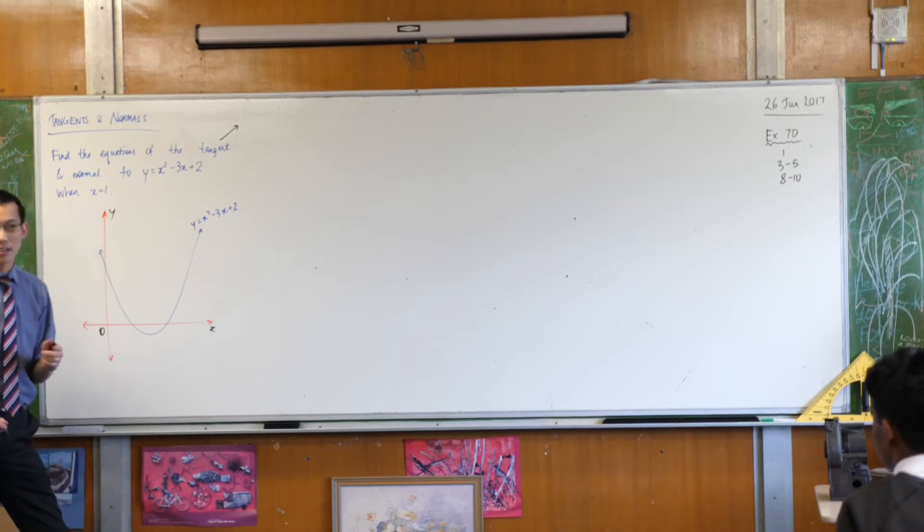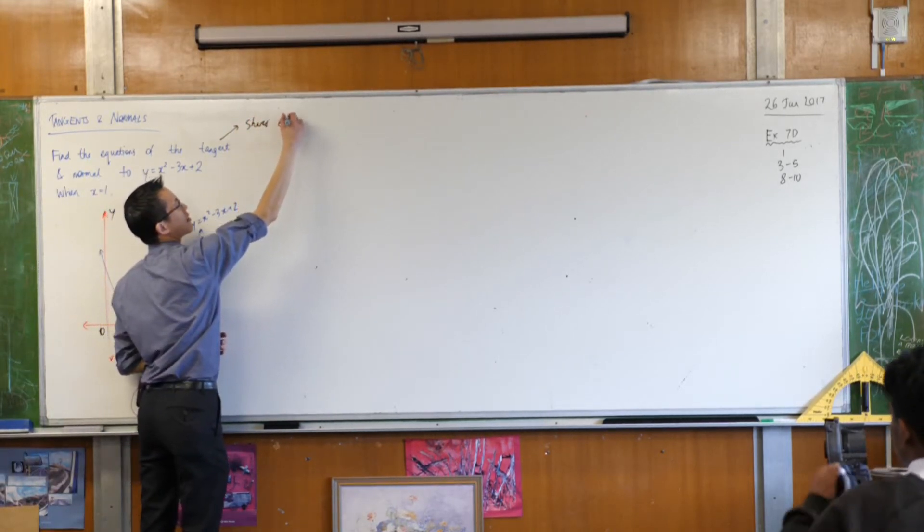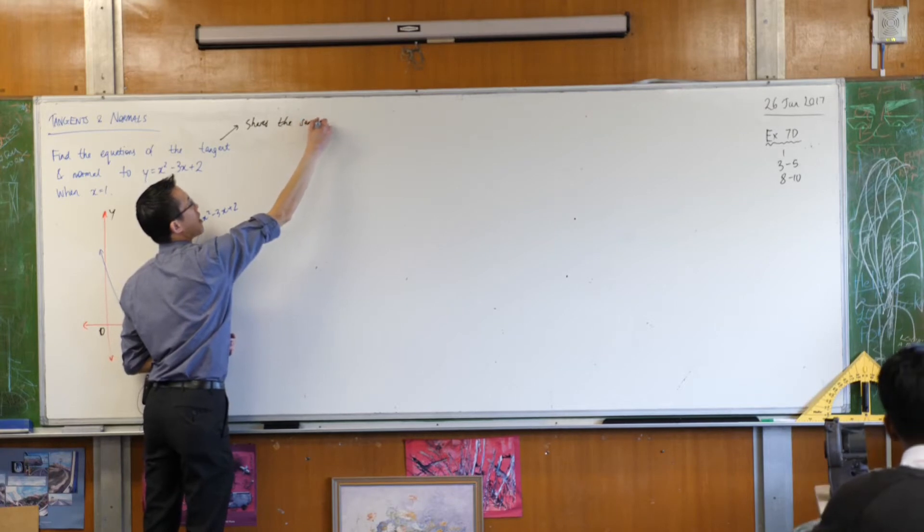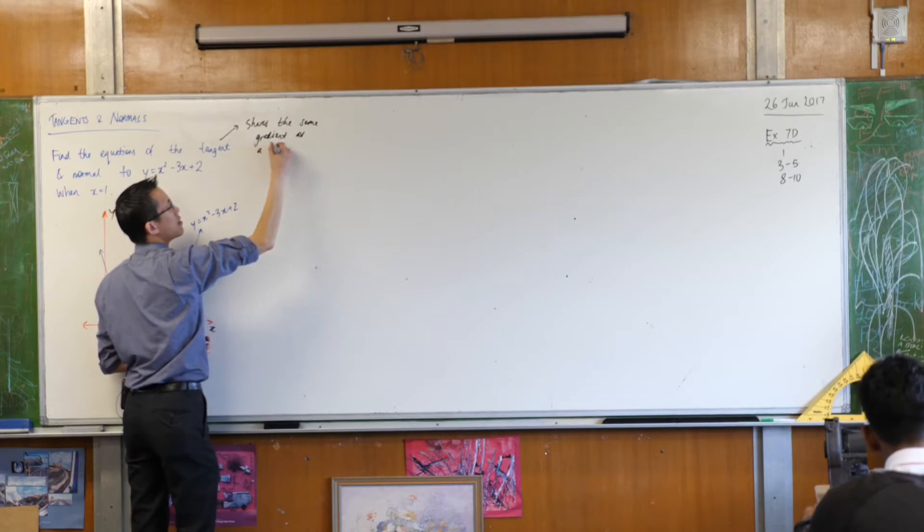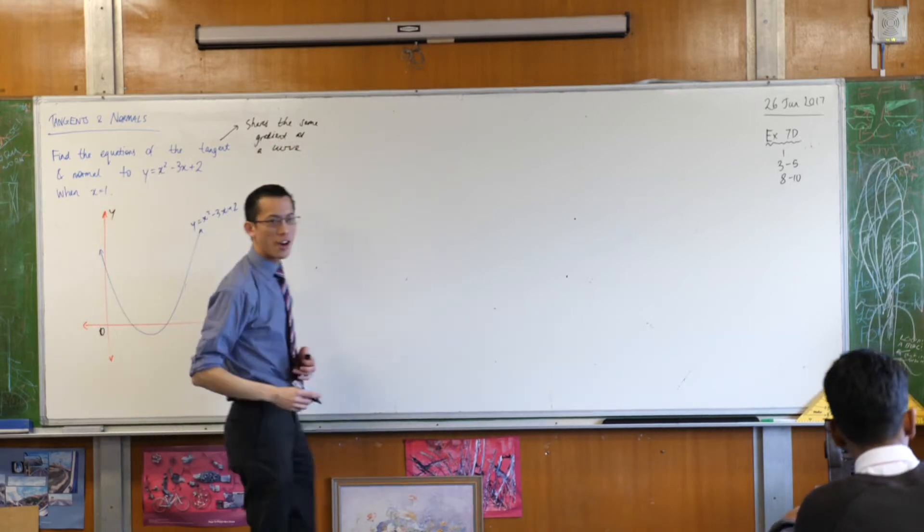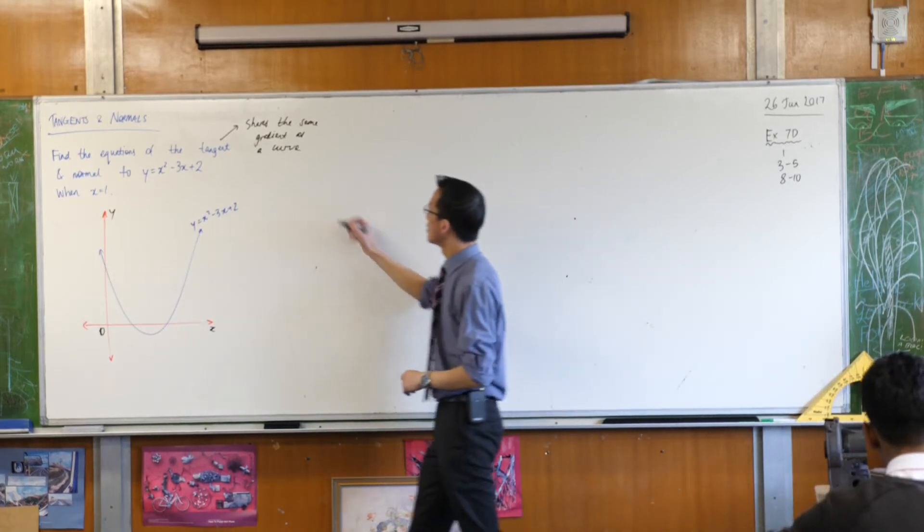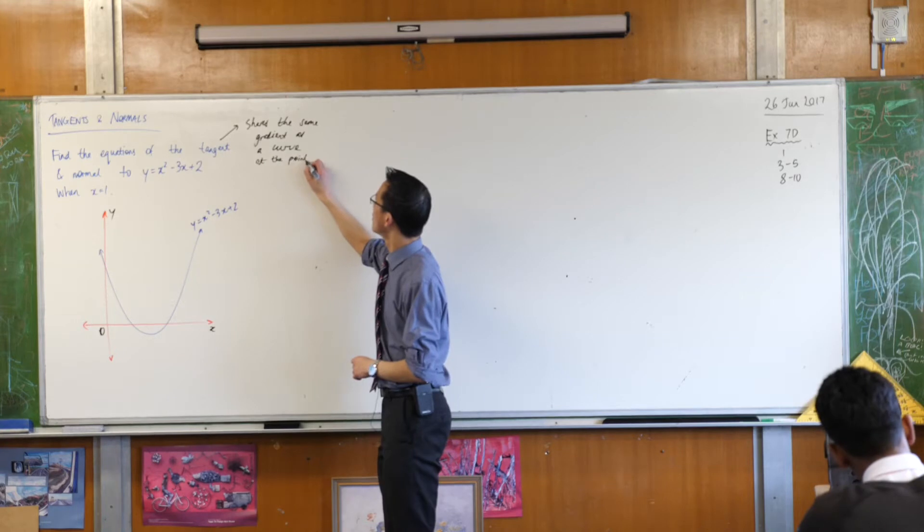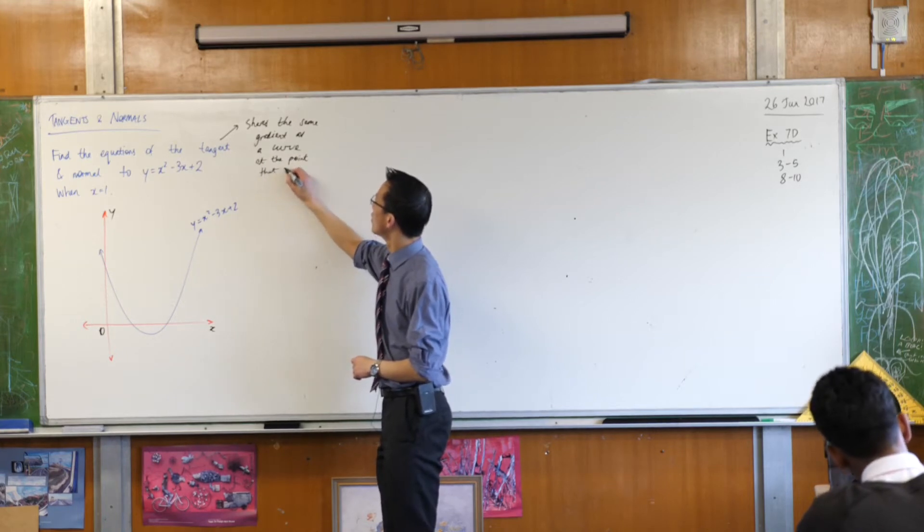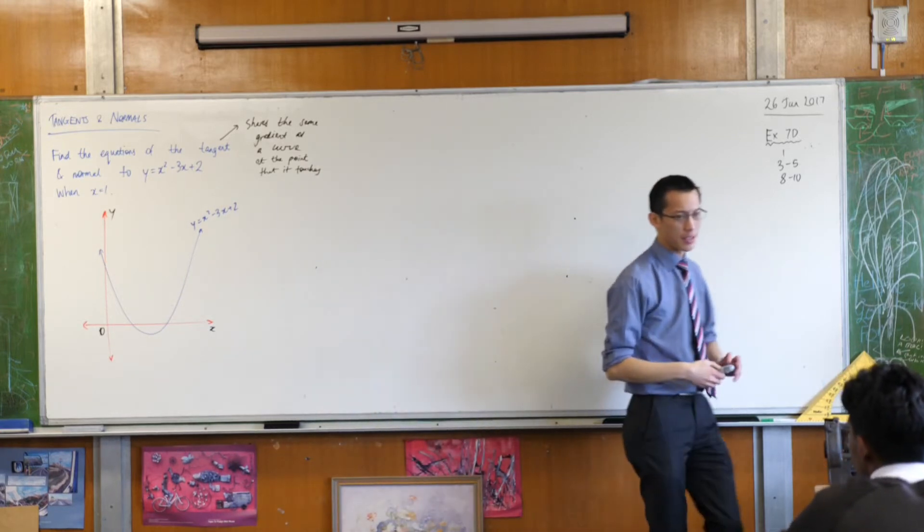A tangent is a line, it's a straight line, that shares the same gradient as the curve that it's just touching, okay? At that point. At the point that it touches. So that's what a tangent is.